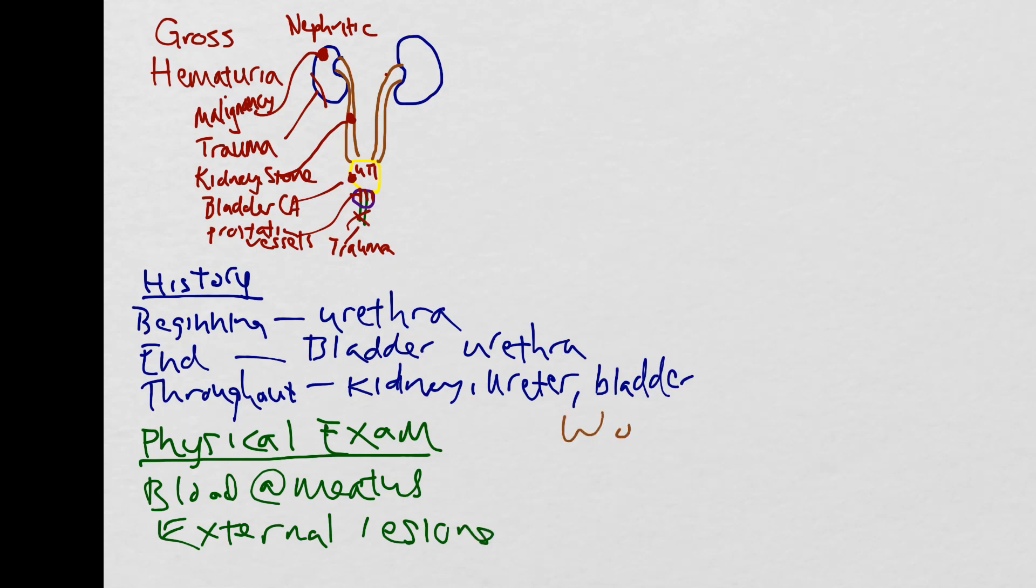For your workup, you want to order a CBC to make sure the patient is not anemic, coags to make sure that the patient is not anticoagulated, a UA to make sure that the patient is not having a UTI, a basic metabolic panel to assess the patient's creatinine as well as to make sure they're not uremic as that may inhibit platelet aggregation. And if the patient is really bleeding, you want to order a type and cross and get them ready for transfusion.